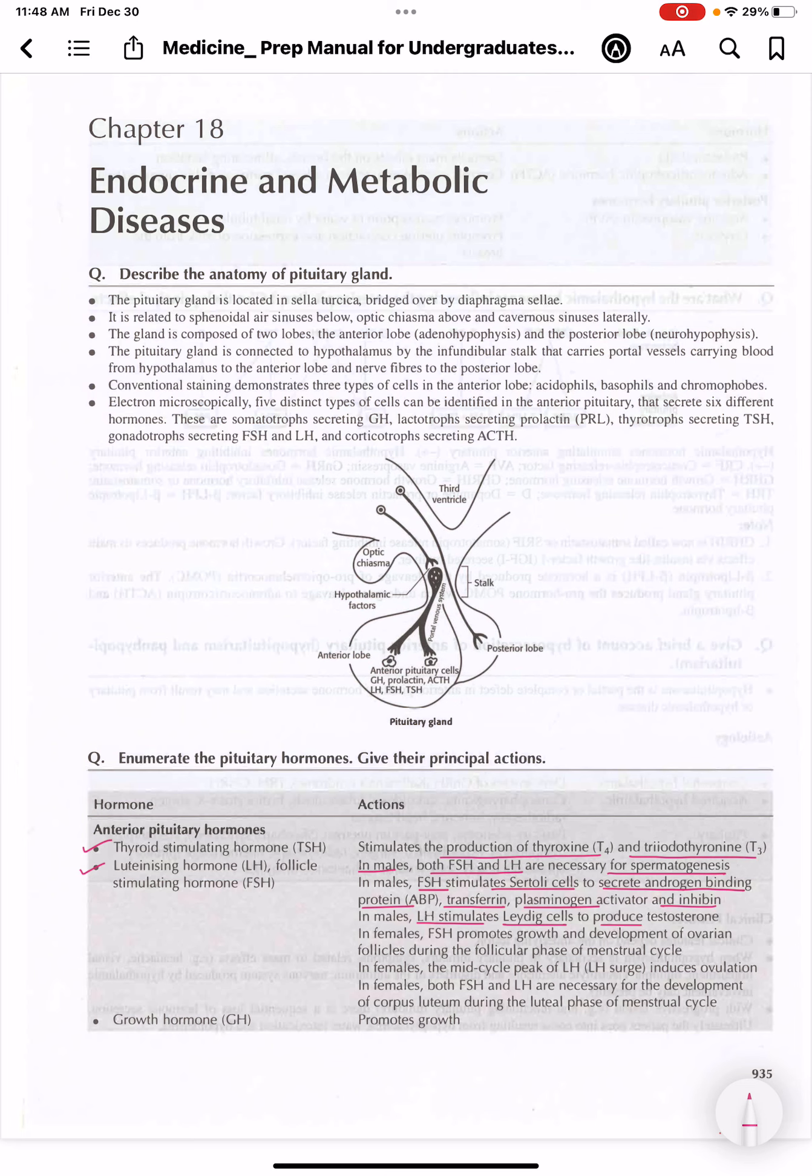In females, we can learn it by - as we can see in FSH there is an S, so FSH will stimulate Sertoli cells. LH stimulates Leydig cells - LL. You can learn it by this trick. FSH promotes growth and development of ovarian follicles during the follicular phase.